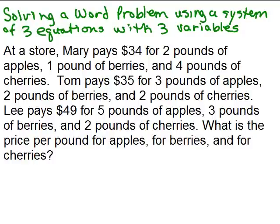We're going to solve this word problem by using a system of equations with three variables. At a store, Mary pays $35 for 2 pounds of apples, 1 pound of berries, and 4 pounds of cherries. Tom pays $35 for 3 pounds of apples, 2 pounds of berries, and 2 pounds of cherries. And Lee pays $49 for 5 pounds of apples, 3 pounds of berries, and 2 pounds of cherries. So what is the price per pound for apples, for berries, and for cherries?